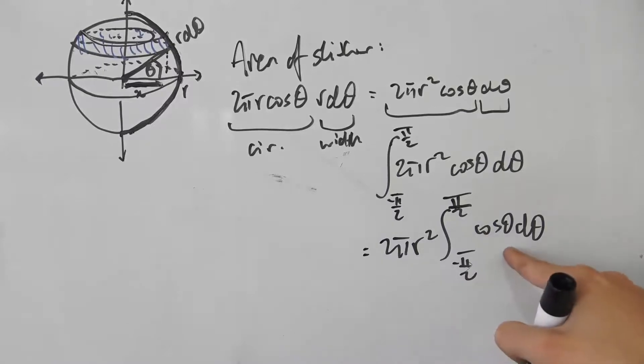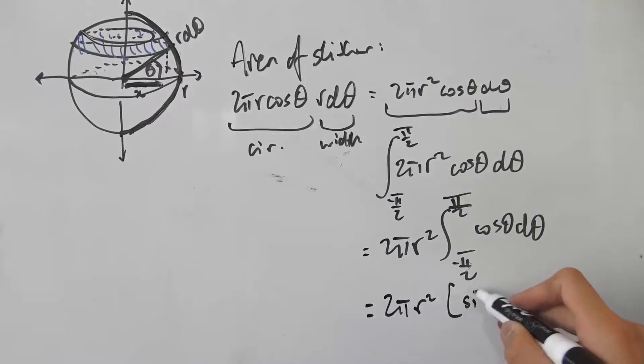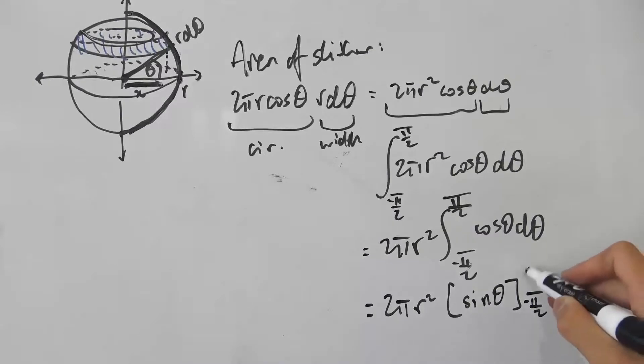Now we can integrate cos θ. That's really easy, that's just sin θ. So we have 2πr² times sin θ evaluated from negative π/2 to π/2. We just simply plug in the bounds inside of this function here.